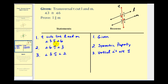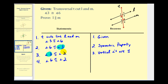Now you can see why we used the symmetric property in step two. If we have angle six congruent to angle three, and angle three congruent to angle two, we can use the transitive property to state that angle six is congruent to angle two. In order to apply the transitive property, we have to have these congruent angles linked — angle six congruent to angle three, and angle three congruent to angle two, so they connect. The justification here is the transitive property.